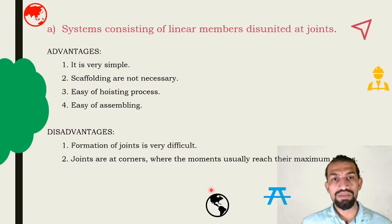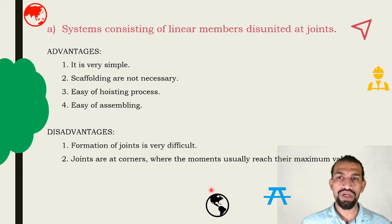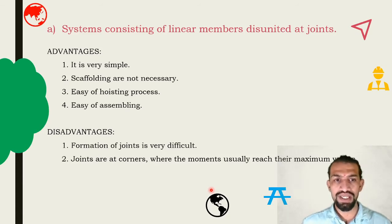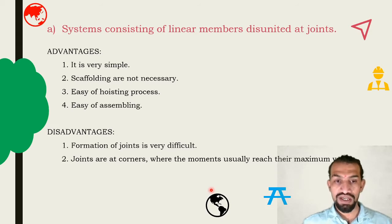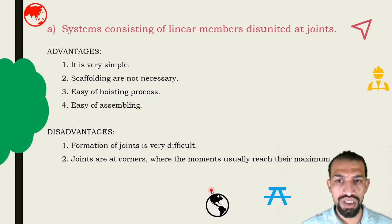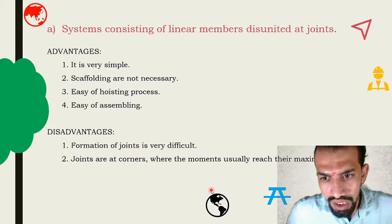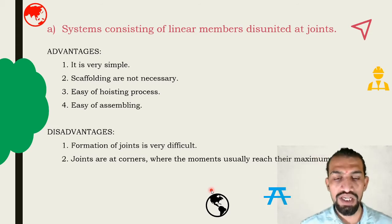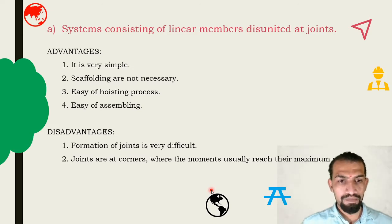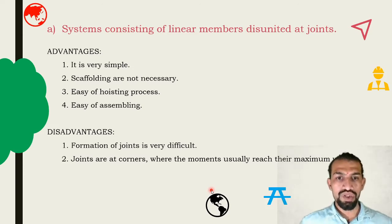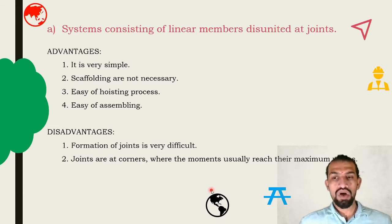To summarize Method 1 — systems consisting of linear members disunited at joints: Advantages are that scaffolding is not necessary, the hoisting process is easy, and assembly is easy. The disadvantage is that formation of joints is very difficult. How to form a joint is the most difficult part. The joints are at corners where moments usually reach their maximum values, which is the key disadvantage.